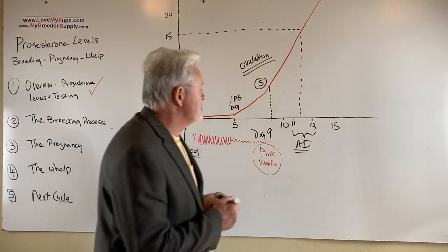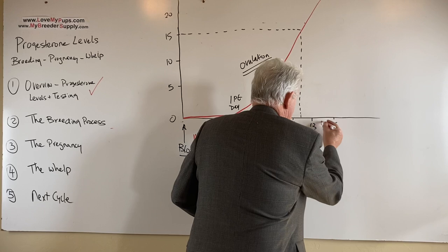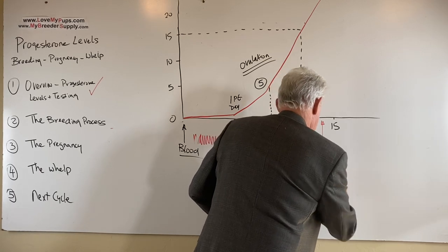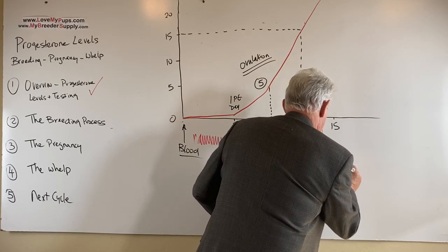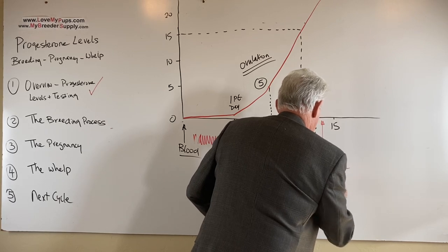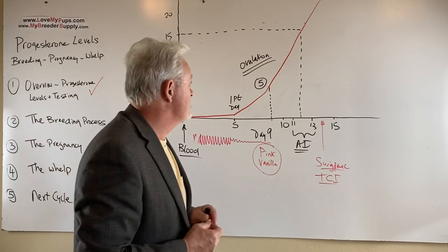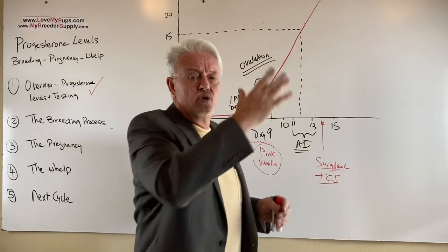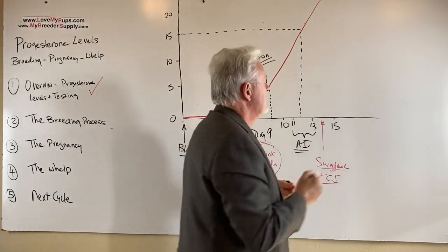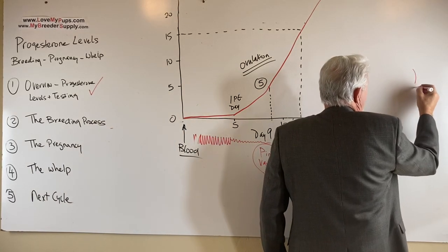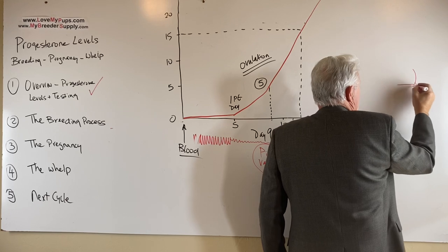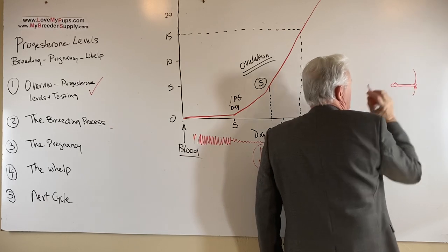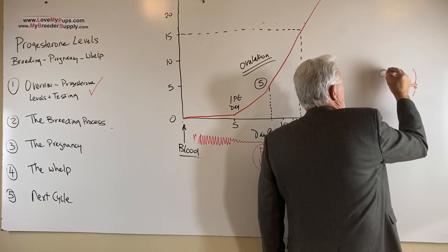Or if we're going to do a surgical AI, the surgical AI is done a day later. This is a surgical. It's one day or a transcervical, surgical, or a transcervical TCI. Either one of those are done typically a day later when you do a vaginal on a level of 15. Why? Because the semen does not have to travel all the way up the vaginal canal. If you look at the anatomy of a dog, here's the back end of the dog, here's the vulva here. And there's a canal that then ends up in a what's called a vestibule. And there's a little thing called the os. And that then goes up into the horns of the uterus.